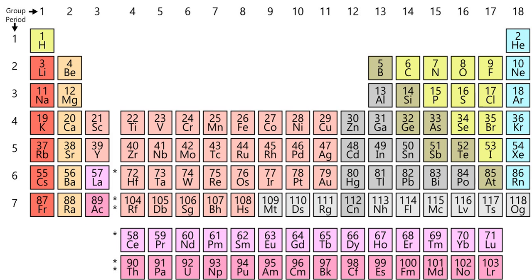In 1988, the new IUPAC naming system was put into use, and the old group names were deprecated. Some of these groups have been given trivial names, although some are rarely used. Groups 3 to 10 have no trivial names and are referred to simply by their group numbers or by the name of the first member of their group, such as the scandium group.